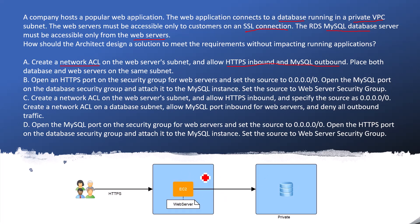If they are on the same subnet, it would be a private subnet, creating more complication for user access to the web server. It is never advisable to have the web server inside the private subnet where the database is also running, so that answer is wrong. Option B says open an HTTPS port on the security group for web servers and set the source to 0.0.0.0/0. Open the MySQL port on the database security group, attach it to the MySQL instance, and set the source to the web server security group. We will discuss what 0.0.0.0/0 means and how to set the source to the web server security group.